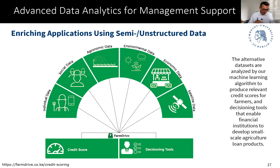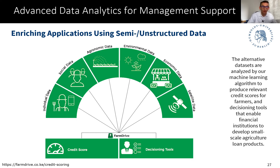Let me show you one example in more detail. You can check out the website farmlife.co.ke — it's related to credit scoring in agriculture. This tool is in use in Africa, where there were a large number of rather small farmers and no well-developed credit scoring ecosystem. There were no credit bureaus like Shufar or Experian, so financial institutions struggled with judging whether small farmers would be able to repay debt. It was very difficult for farmers to get a loan from a bank because they had no credit history.